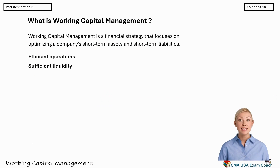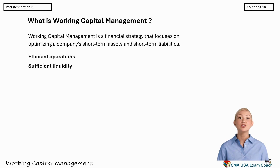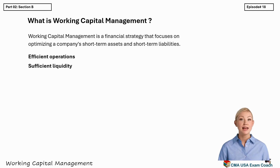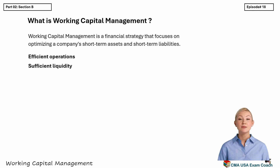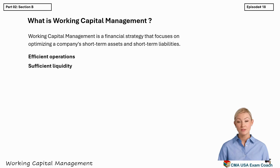What exactly is working capital management? Working capital management is a financial strategy that focuses on optimizing a company's short-term assets and short-term liabilities. The goal is to ensure two very important things: efficient operations — making sure the company has the right amount of inventory, pays suppliers on time, collects money from customers without delay, and doesn't let cash sit idle — and sufficient liquidity, meaning always having enough cash or near-cash resources to meet short-term obligations, without having to borrow emergency funds just to pay salaries or utility bills.